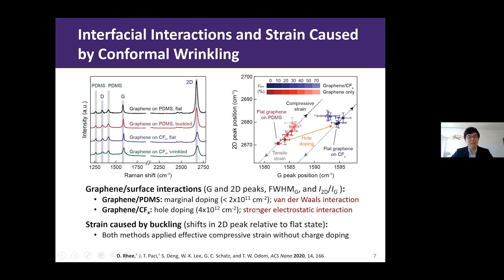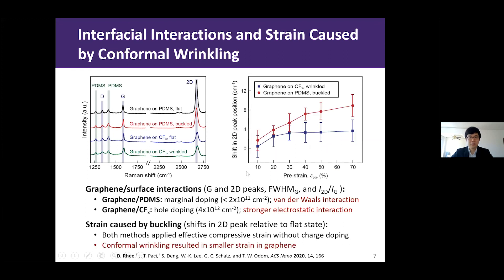We then investigated the Raman spectroscopy after relieving pre-strain to compress graphene, for both with and without the fluoropolymer. Both delaminated buckling and conformal wrinkling shift G and 2D peaks toward higher wave numbers, following a line with a slope of 2.2, which is the trend line expected for graphene under compression at constant strain. Comparing the amount of shift for both cases, conformal wrinkling results in smaller shifts in the 2D peak position compared to delaminated buckling at all tested pre-strains, which means that conformal wrinkling was beneficial in reducing strain concentration in graphene.